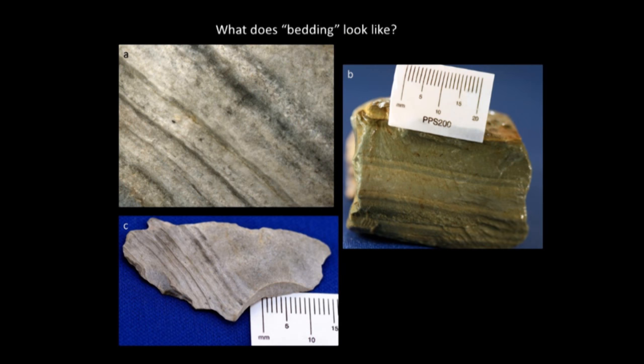Bedding may look a lot like flow banding, and it can. I'm still working to put into words the things that make us lean one way or another. Bedding occurs in rocks like tuffs, siltstones, or sandstones; flow banding occurs in lavas. The rocks in these pictures are on the table for you to look at this afternoon and try the guide. On the fresh surface you can see variation in thickness of beds and color variation — though those can appear in flow banding too. These two can be hard to tell apart.